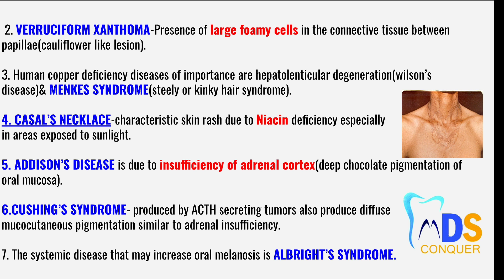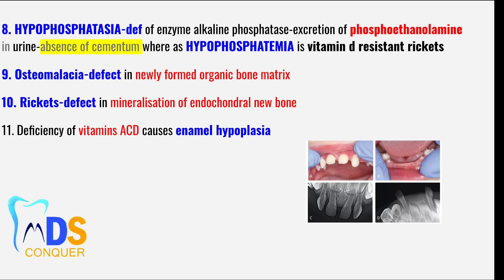Point number seven: the systemic disease that may increase oral melanosis is Albright syndrome. Point number eight: hypophosphatasia is a condition where deficiency of the enzyme alkaline phosphatase, along with excretion of phosphoethanolamine in urine and absence of cementum, is seen — whereas hypophosphatemia is vitamin D-resistant rickets.